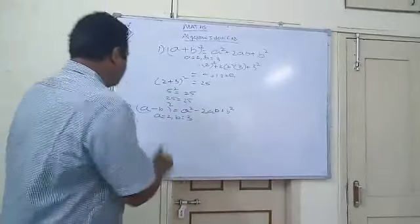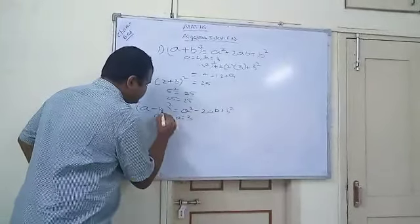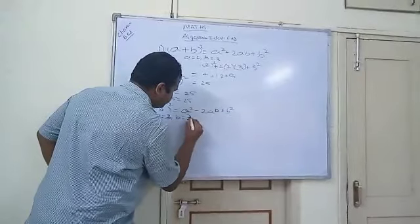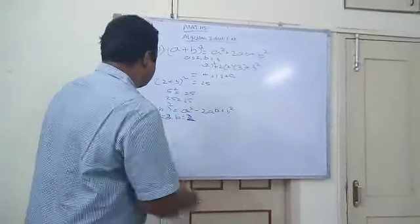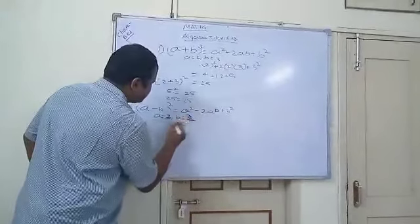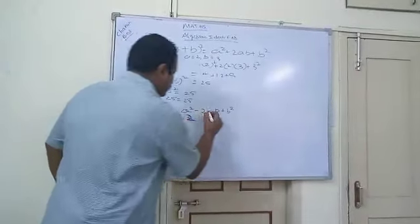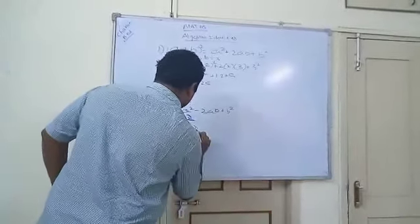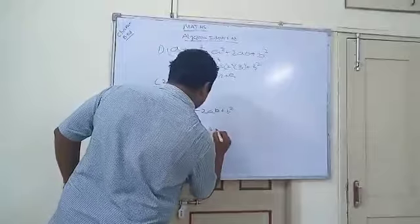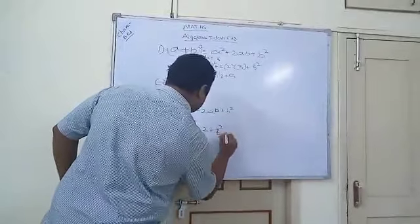Let us solve this. See, 3 square is 9. 2 into 3 into 2 plus 2 square. Means it is 4.